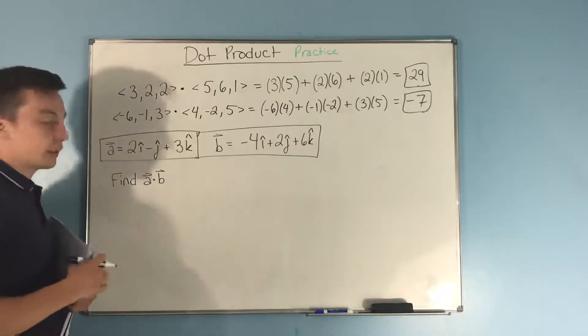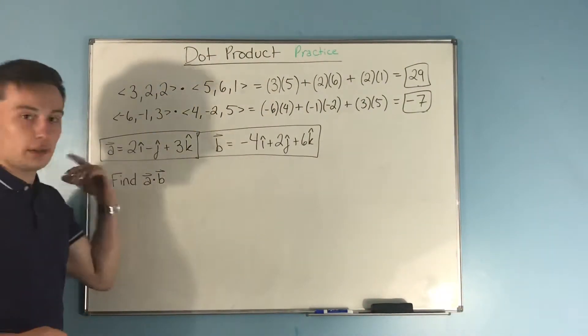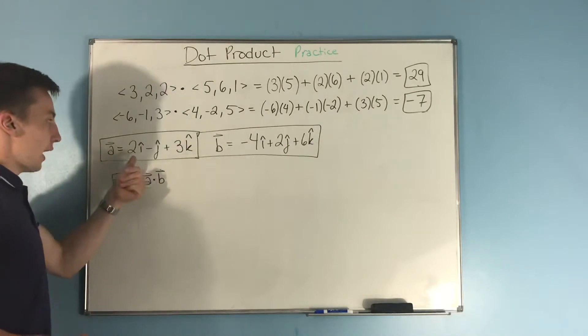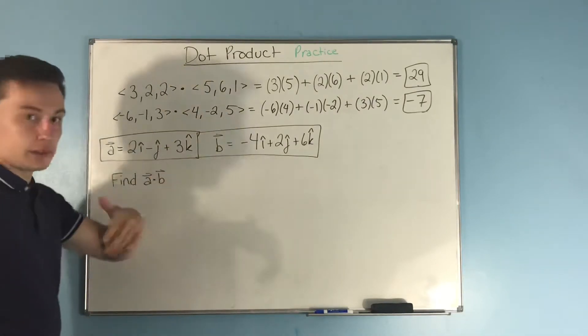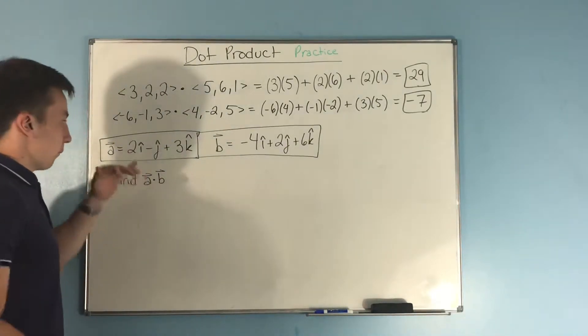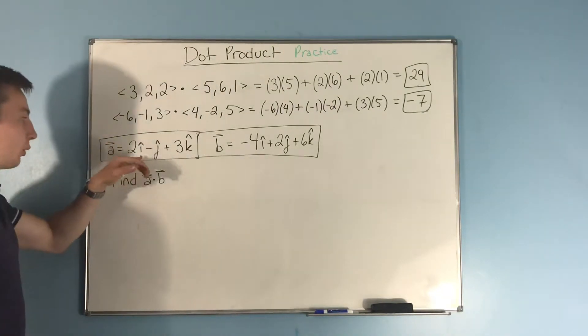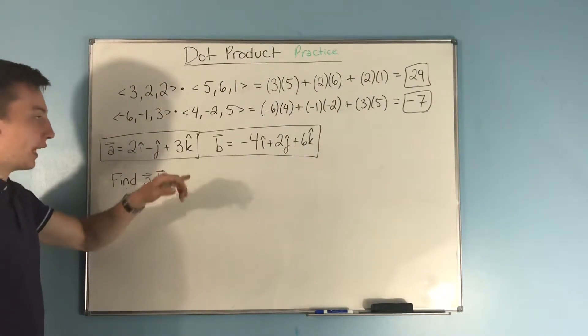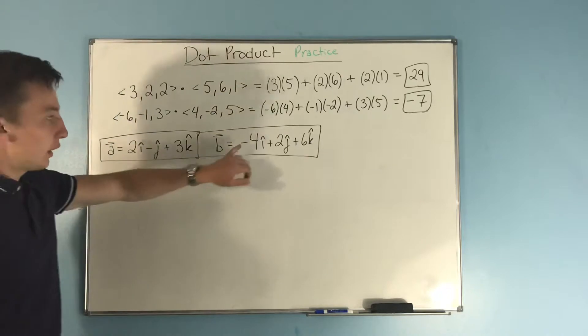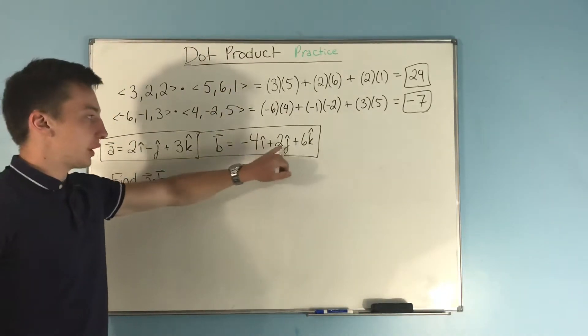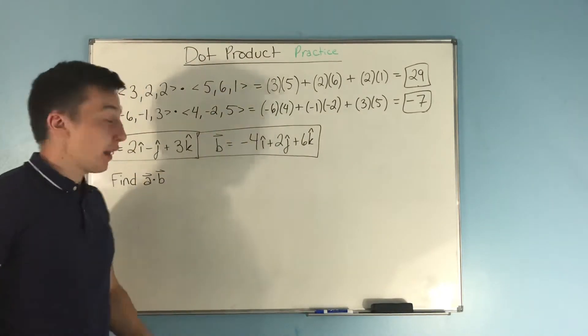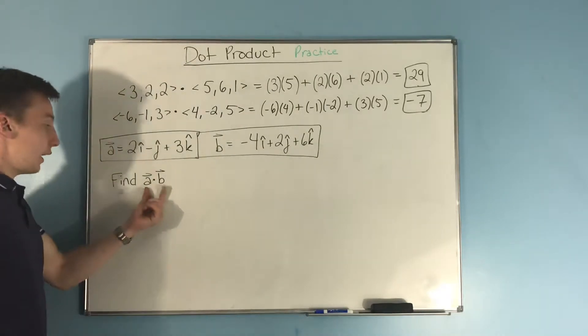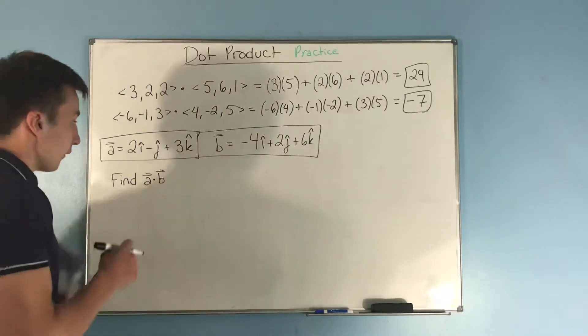So, now, here's just two vectors in different notation. And now, we have it with our unit vectors. So, now we have vector A being 2i hat minus j hat plus 3k hat. And we have vector B as negative 4i hat plus 2j hat plus 6k hat. And we want to find vector A dot vector B.